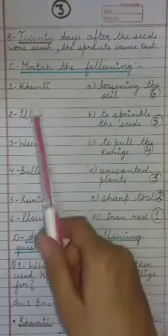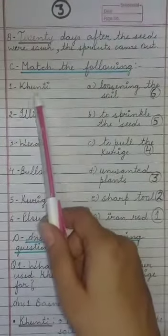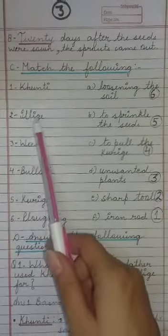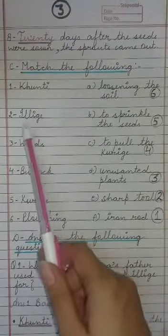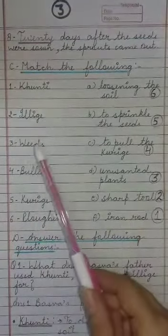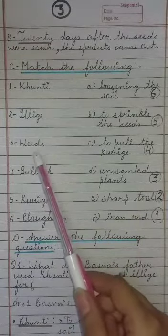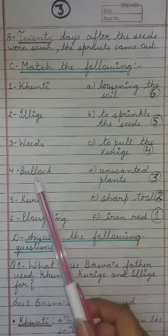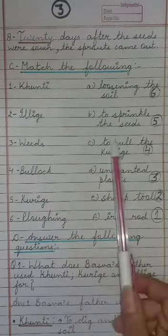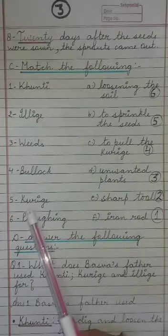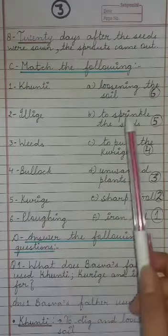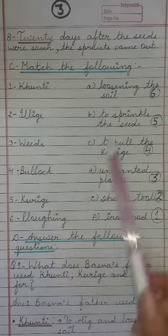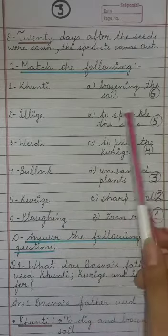Match the Following. Khunti — iron rod. Illiq — sharp tool. Weeds — unwanted plants. Bullock — to pull the kurigi. Kurigi — to sprinkle the seeds. Plowing — loosening the soil.